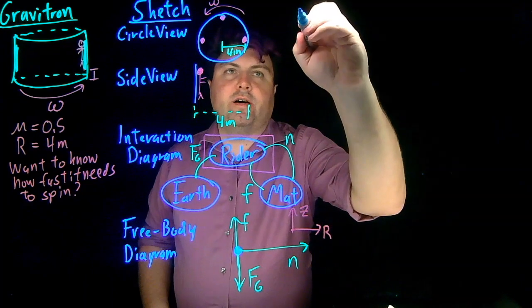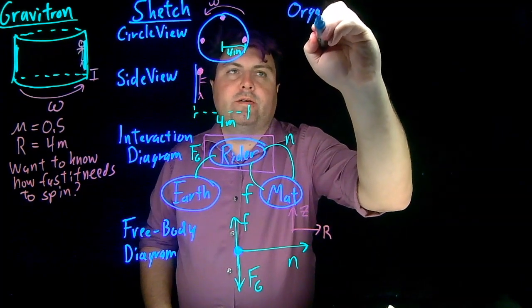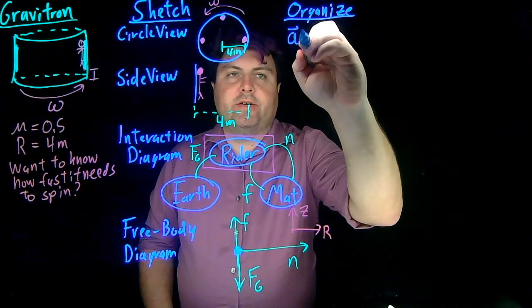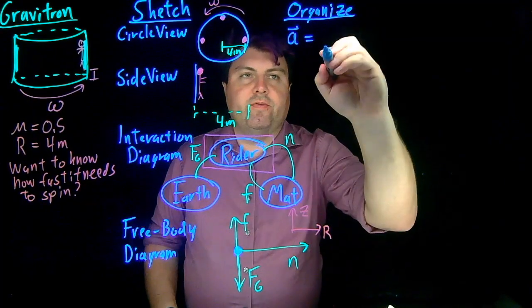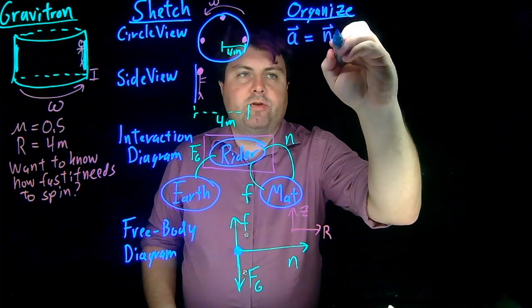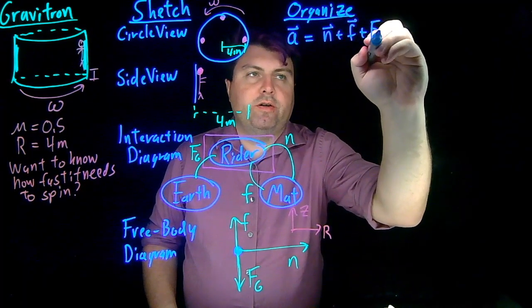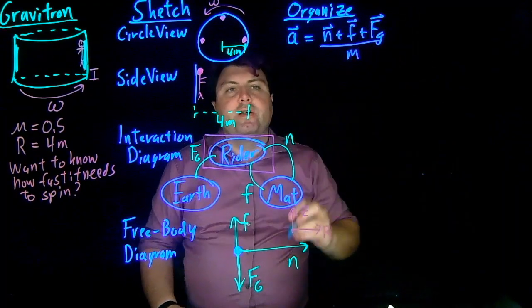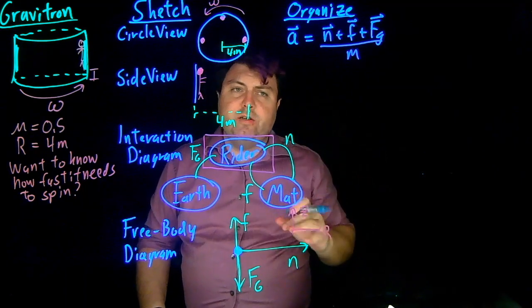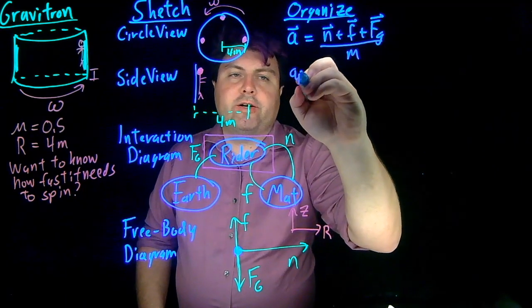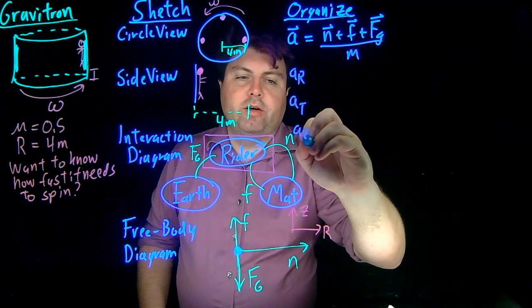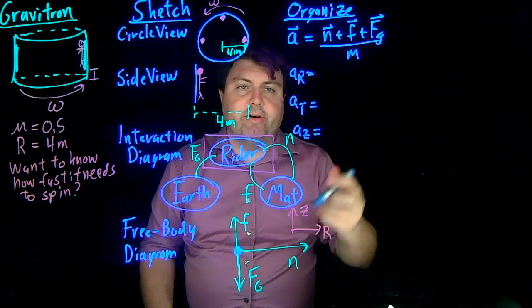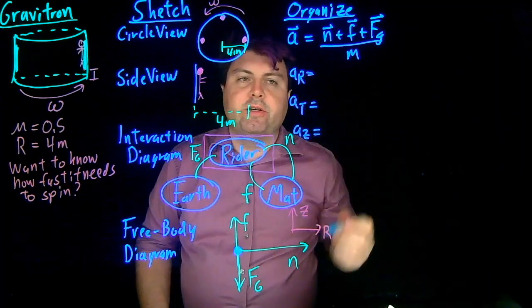Our next step is our organized step. In our organized step, we have our acceleration is equal to the sum of all of our forces. So we have the normal force, the force of friction, the force of gravity, all divided by the mass. And then once we have that, we want to decompose into three directions. That's the new thing for this week, is that we have three directions to decompose in. But we're always decomposing in the same three directions, radial, tangential, and the Z direction.